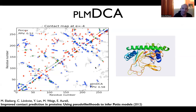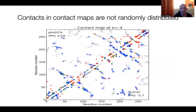Another thing to notice is that the contacts in the protein are not randomly distributed — they have certain patterns, including diagonal patterns and more complex patterns. Of course, machine learning is good at recognizing patterns. If you see one contact here, it's quite likely that other contacts are predicted in the diagonal around it, so you can use that to improve the contact predictions.